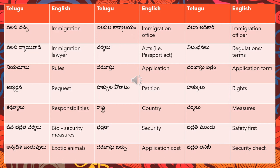The first word is 'valasala vachche' — that is immigration. 'valasala karyalayam' is immigration office; 'karyalayam' means office. 'valasala adhikari' is immigration officer; 'adhikari' means officer. 'valasala nyayawadi' is immigration lawyer; 'nyayawadi' is the word for lawyer. 'karyalu' means act — for example, Passport Act, Water Bill Act, or the Australia Domestic Violence Act.